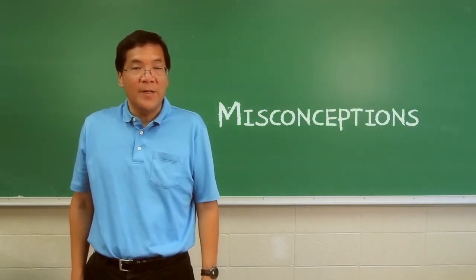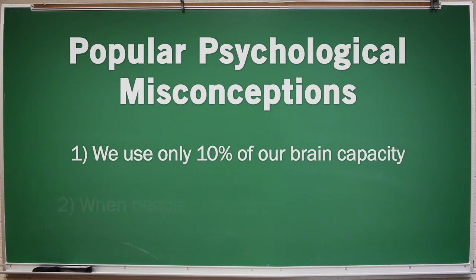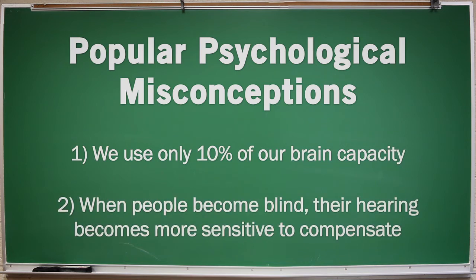Misconceptions are part of prior knowledge that can interfere with learning. Misconceptions occur in every field and they're highly resistant to correction. They come from many sources. Some are part of popular culture and they're spread and reinforced by the general public and the media. Like the misconception that we use only 10 percent of our brain capacity, or that people who are blind develop super sensitive hearing to compensate.